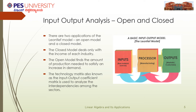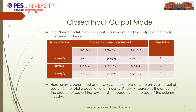The utilization of the output can be direct or indirect. Now, what happens in the case of the closed input-output model? All the industries produce to satisfy the input requirements of the other industries in the model. There is no exogenous sector having a primary input or a final demand, so our first step in approaching this problem would be to create an input-output table.